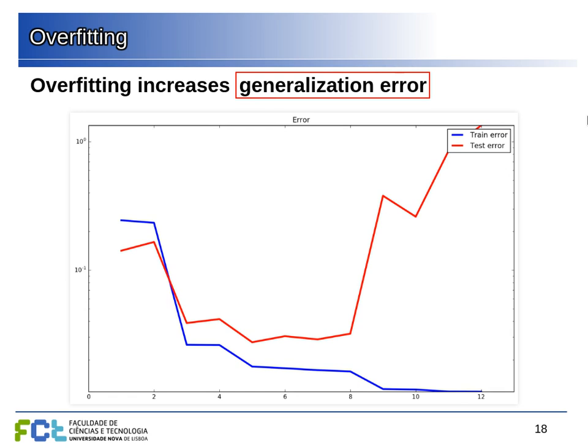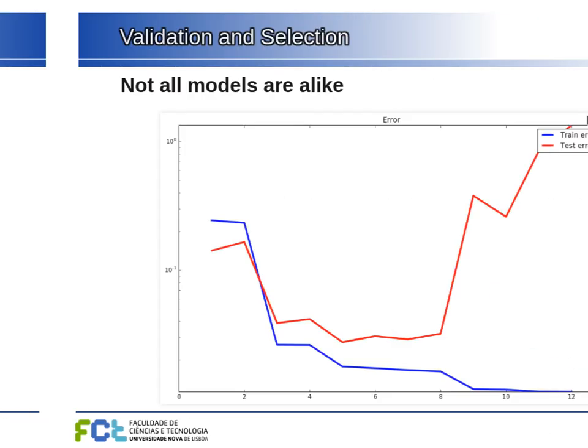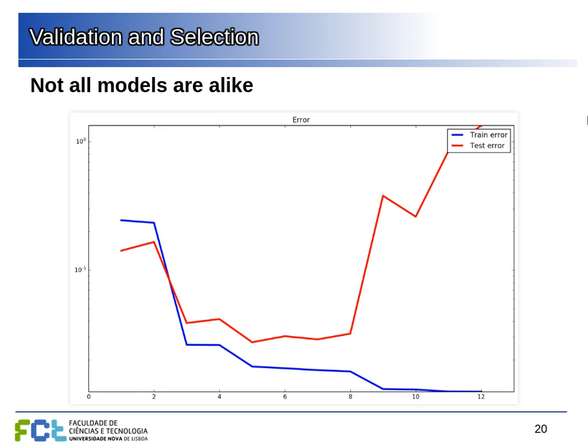Overfitting occurs when the generalization error starts to increase — we're decreasing training error but increasing the true error. To solve this, we can choose the right model or hypothesis class. Around degree five, we minimize the error outside our training set, so that seems to be the best choice.